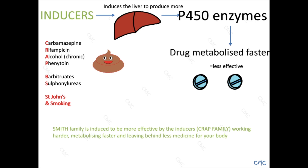Going back to our little story: the Smith family is induced to be more effective by the crap family. They are made to work harder, metabolize the medications faster, and leave behind less medicine for your body, deeming that particular medicine crap.